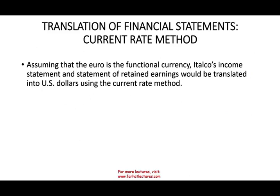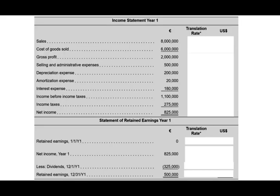We're going to assume the euro is the functional currency and we're going to be using the current rate method. If you're wondering why the euro is the functional currency and why we use the current rate method, look in the description for that explanation. Here's what's going to happen: using the current rate method, we first translate the income statement — pretty straightforward. You'll see later that may not be the case under the other method.